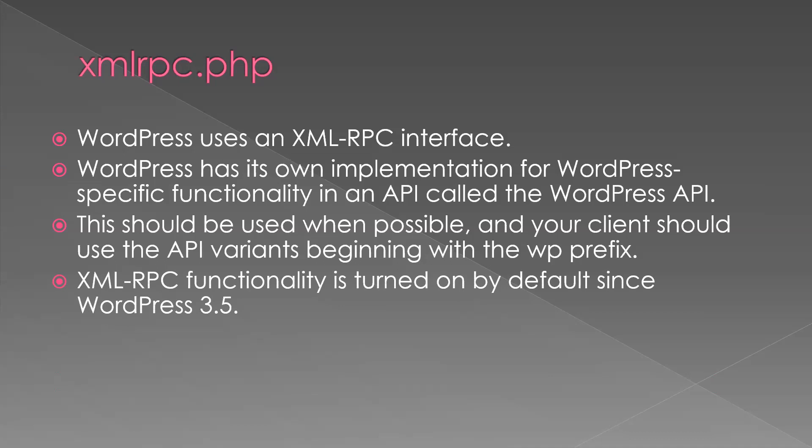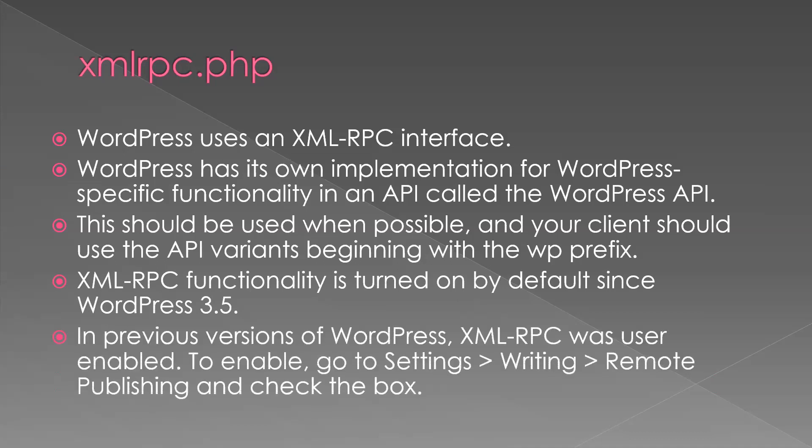XML-RPC functionality is turned on by default since WordPress 3.5. In previous versions of WordPress, XML-RPC was user-enabled. To enable it, go to Settings, Writing, Remote Publishing, and check the box.